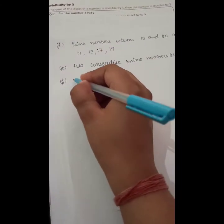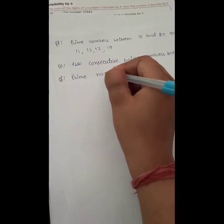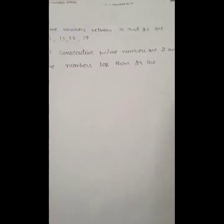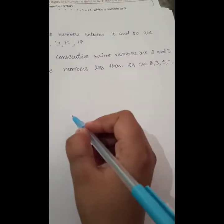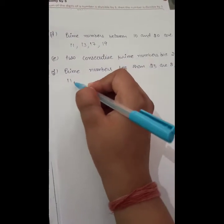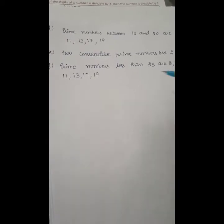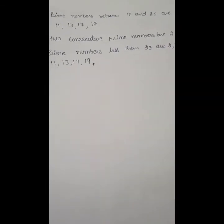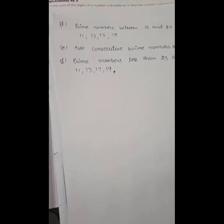Part F: Write all prime numbers less than 23. Starting from 1: 1 is a pseudo prime number so we don't write it. Then 2, 3 — 4 is composite, 5 — 6 composite, 7 — 8 composite, 9 composite, 10 composite, 11, 13, 17, 19. So the prime numbers less than 23 are: 2, 3, 5, 7, 11, 13, 17, and 19.